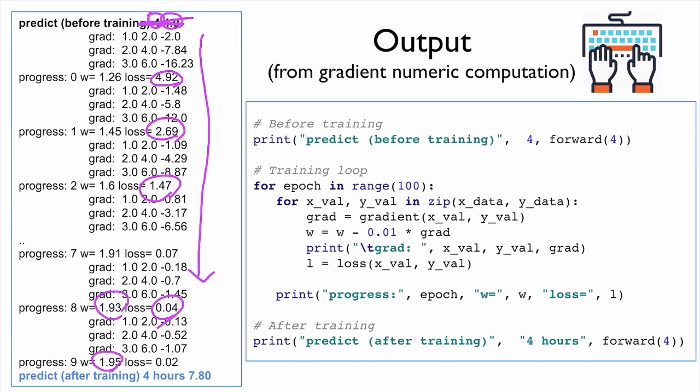And after training, we ask to the machine learning system that, oh, I study four hours. What will I score? And then it will predict almost eight points, which is correct.